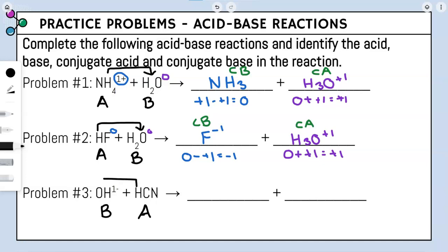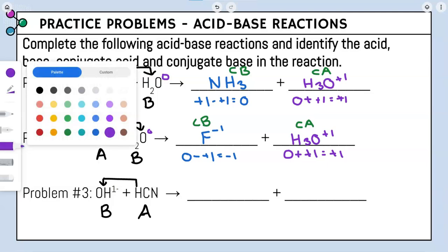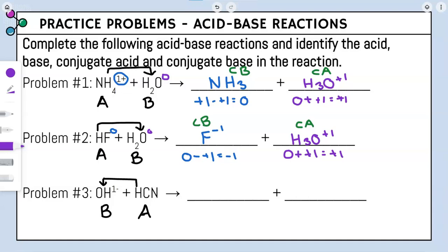Our acids are getting rid of a hydrogen. Looking at our base, it went from one hydrogen to two hydrogens — we write it as H2O, not OH2. It had a negative one charge, but we gained a hydrogen, so we actually have no charge now. Looking at our acid, we got rid of a hydrogen, so what's left is CN. We didn't have a charge, but we lost a hydrogen, so our overall charge is negative one.